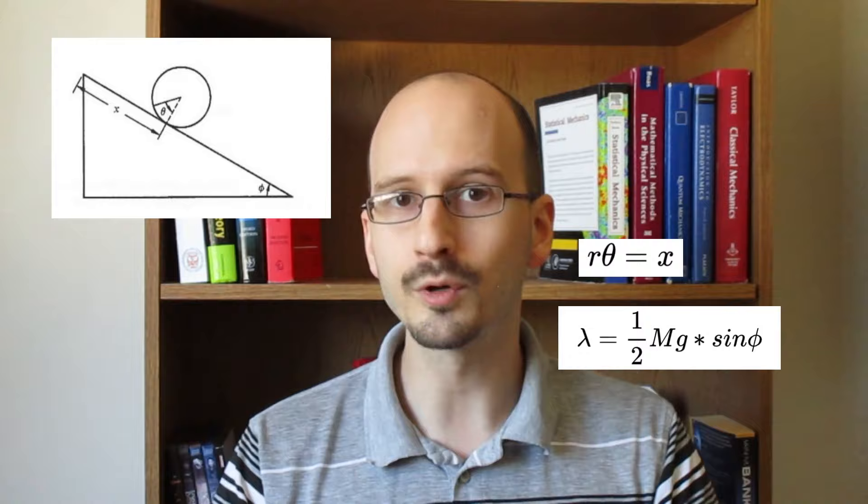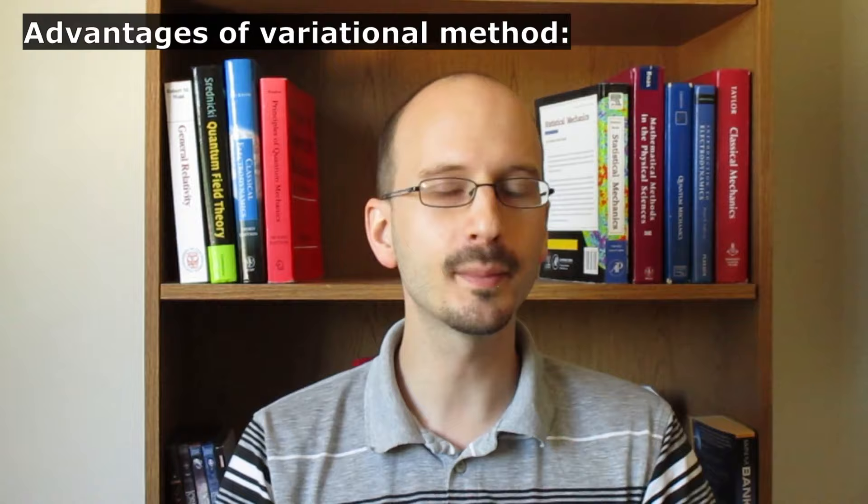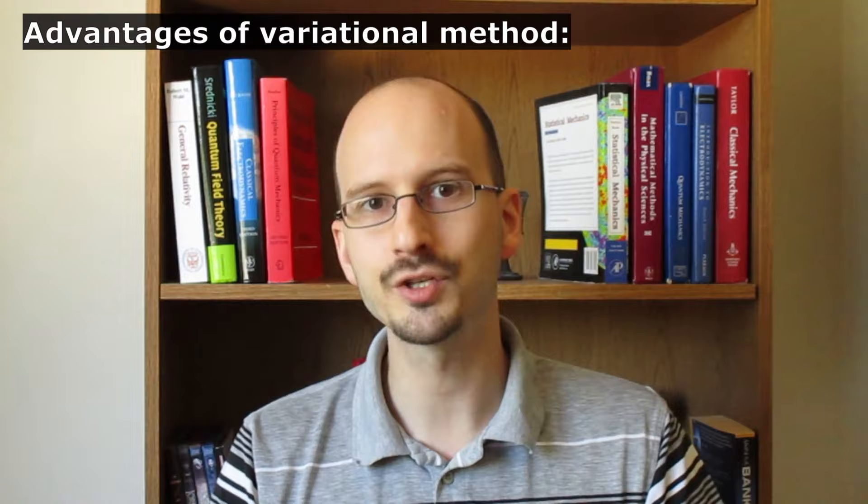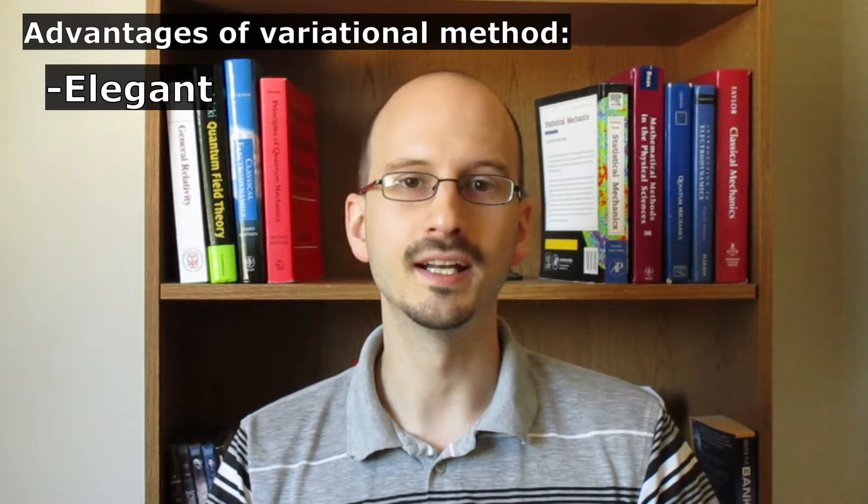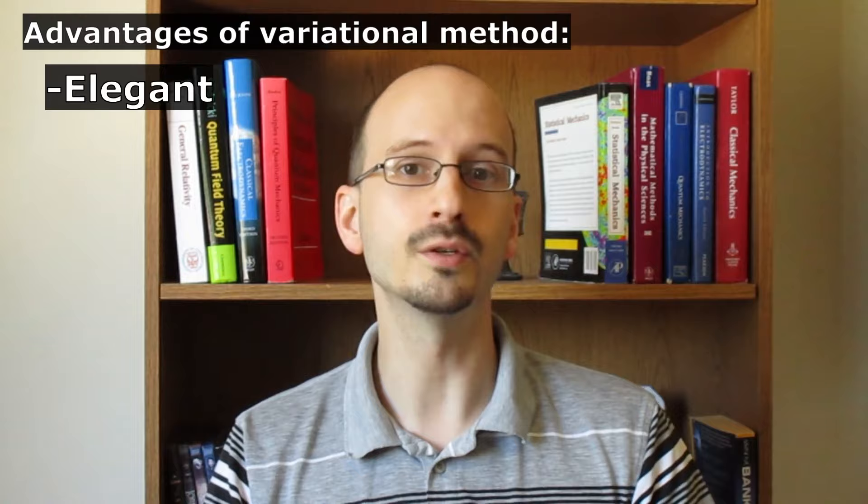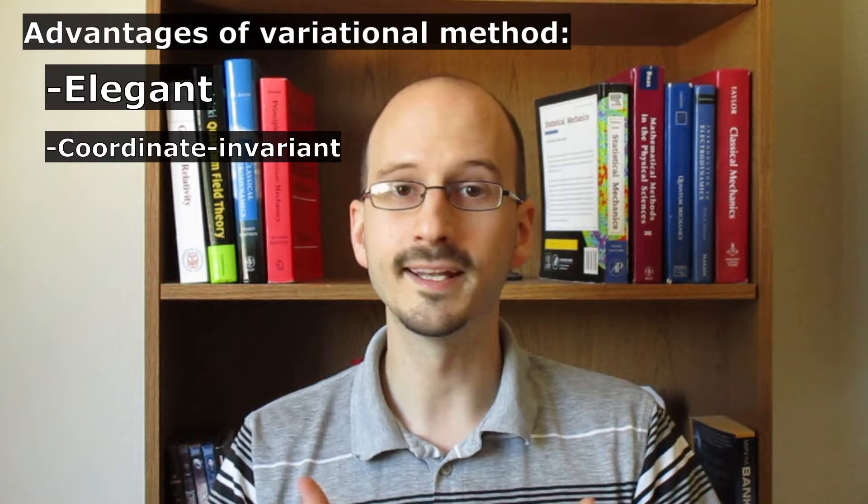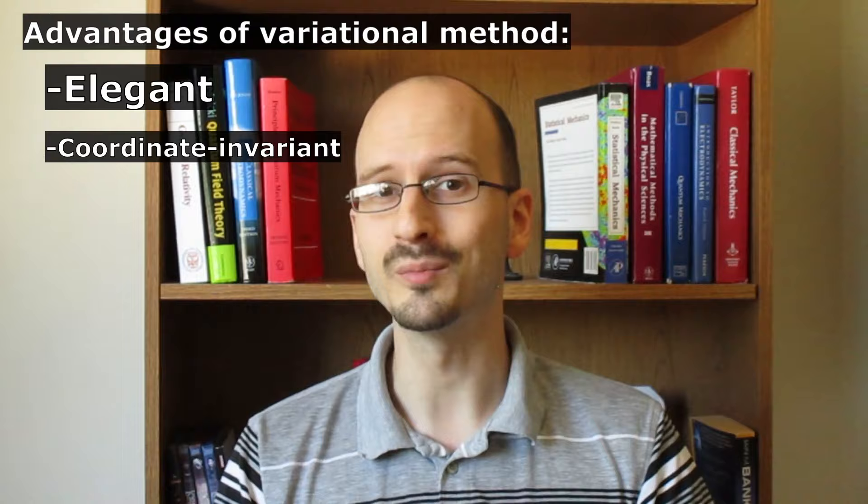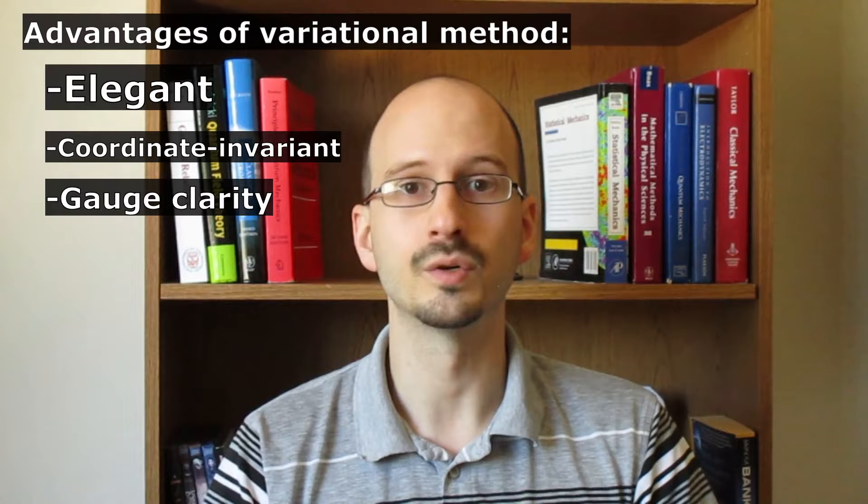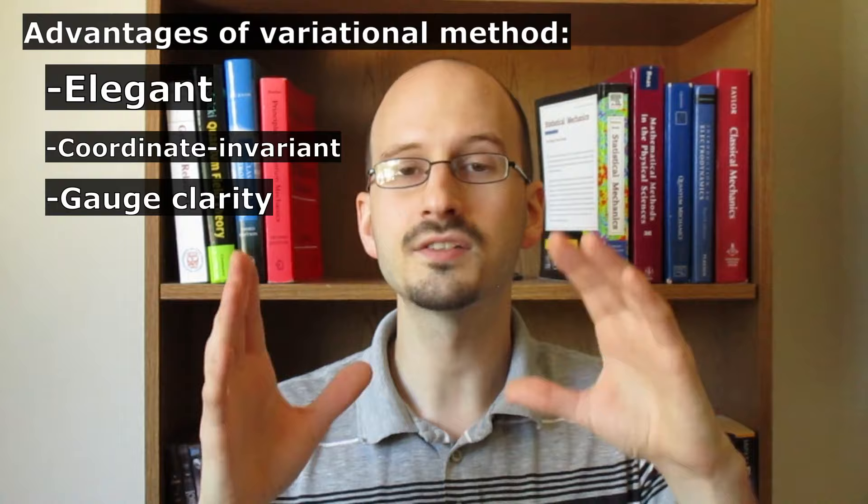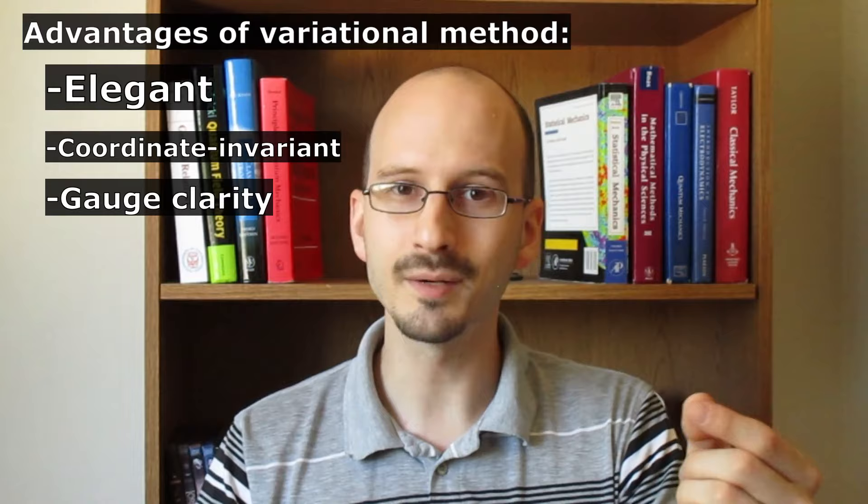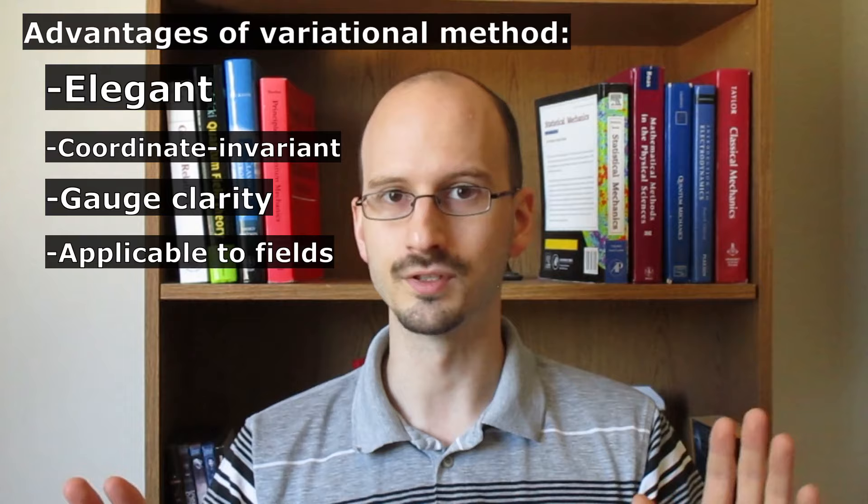Section 2.5 begins by talking about some advantages of using the variational method, the principle of least action and Lagrange's equations, to find the equations of motion. It is elegant. It is a single principle that is widely applicable. Remember, this is the process used in tandem with experiments to find most of the famous equations of physics. It is coordinate invariant. The kinetic energy and the potential energy are the same, regardless of what choice of coordinates we use. There's an abstract advantage, which it's clear why the Lagrangian can have a gauge derivative, because if you look for the variation in the integral of a derivative, but you don't change the endpoints, that whole thing is zero. Also, this method can be extended to fields, which are extremely important in most of physics.